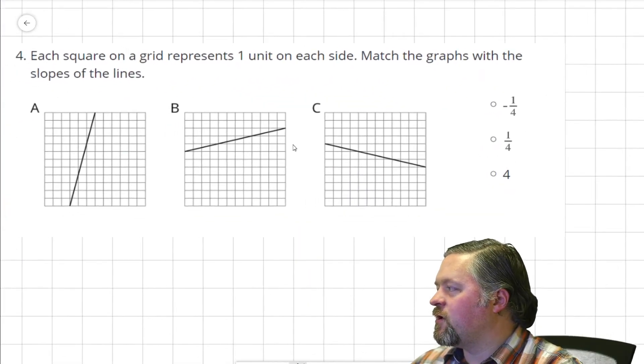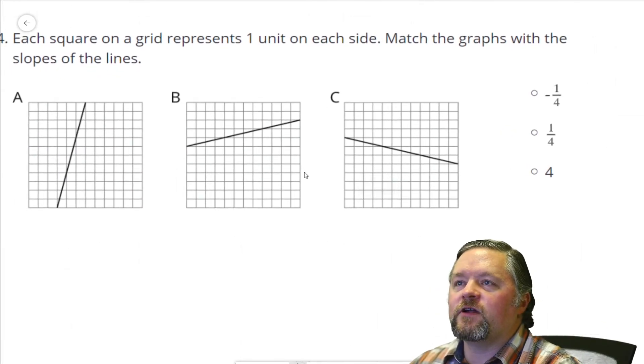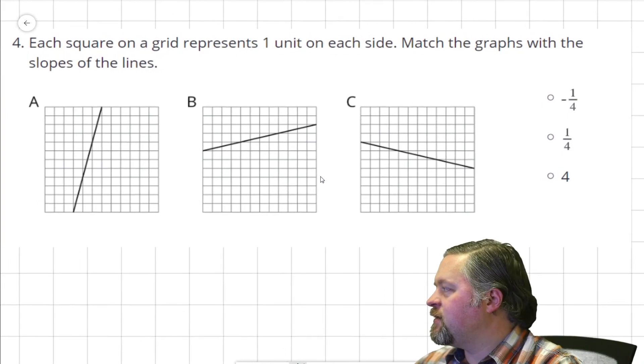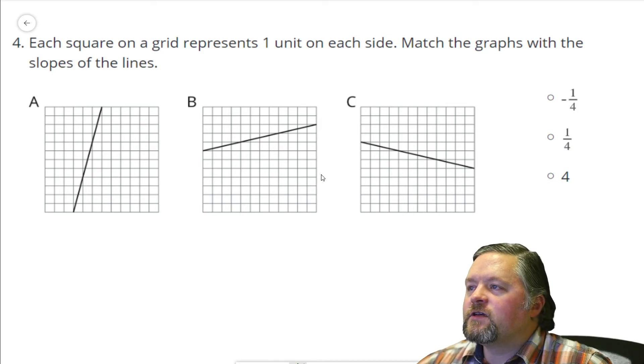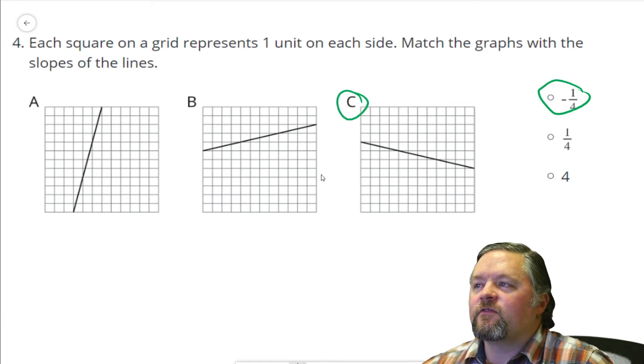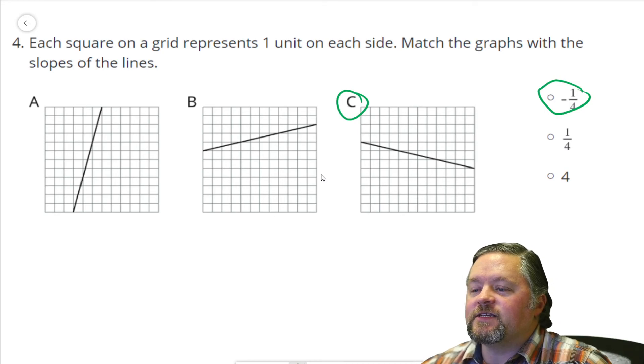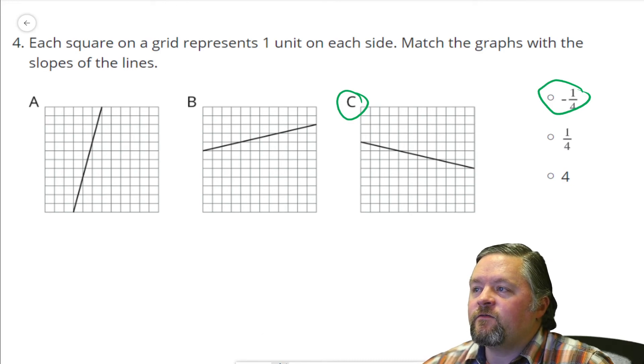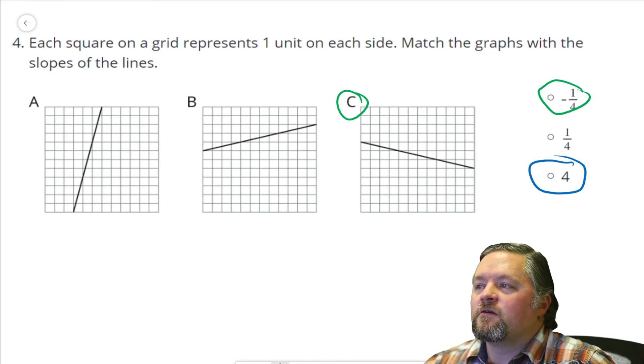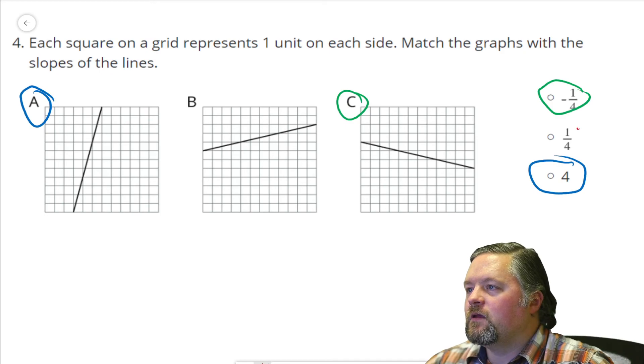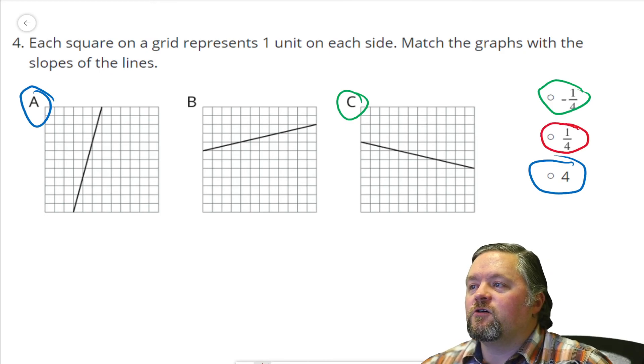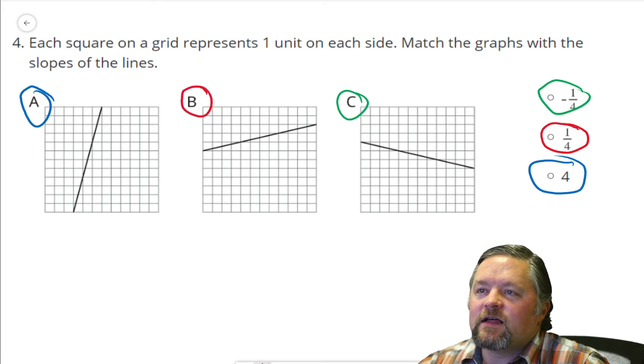Looks like we've got one more question. Each square on the grid represents one unit on each side. Match the graph with the slope of the line. I only see one negative number here and I only see one negative graph. So negative 1/4th has to be C. Now, looking at the other two they're both positive. This one's a larger number. 4 is bigger than 1/4th. That's a steeper slope. Positive and a shallower slope. That's much less than 4. That's a much shallower line.